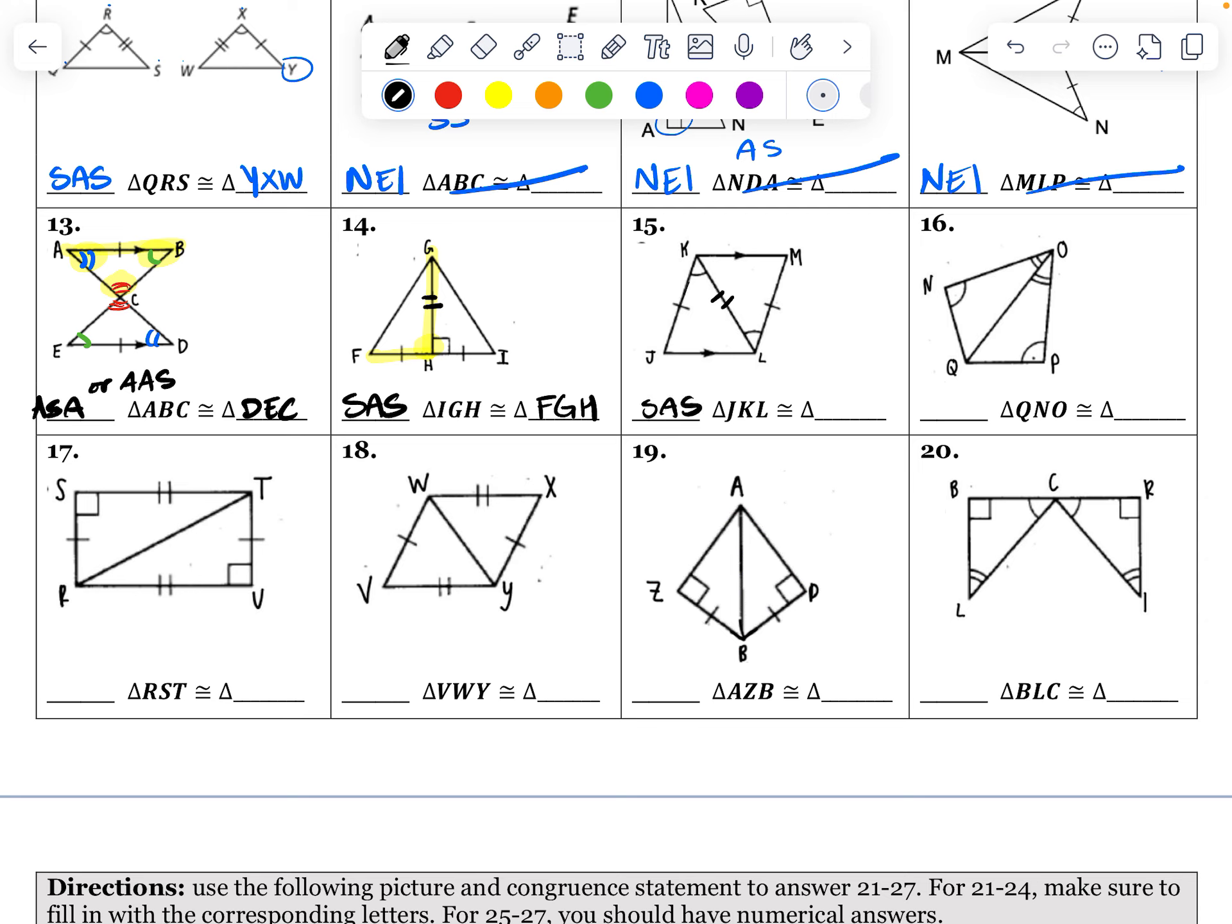And I know that JKL, so J to the K down the middle, is going to be congruent to MLK. Okay, so SAS works.